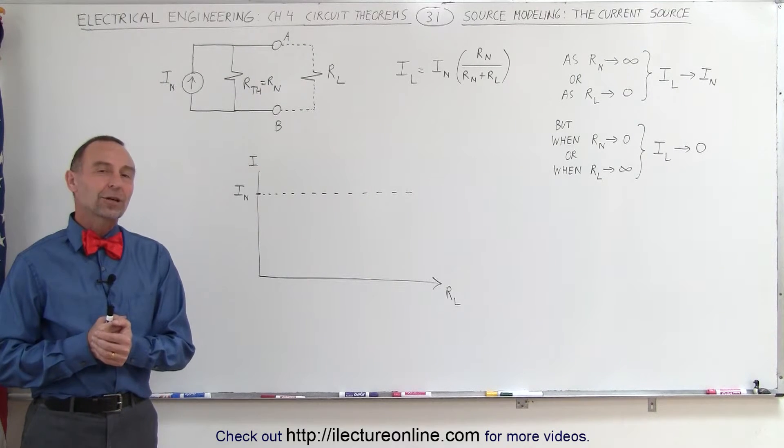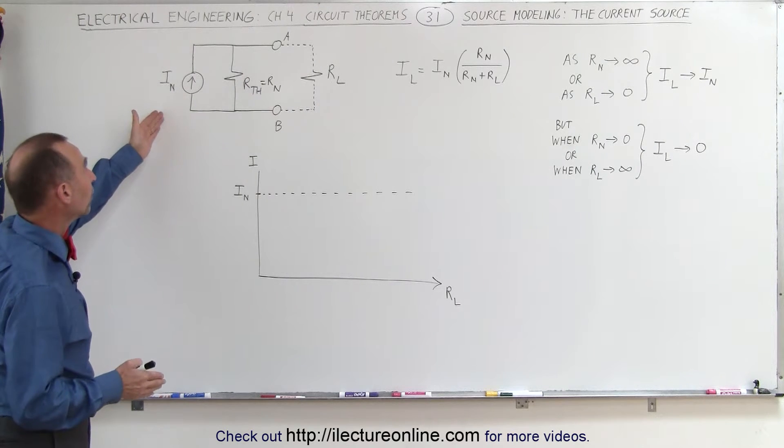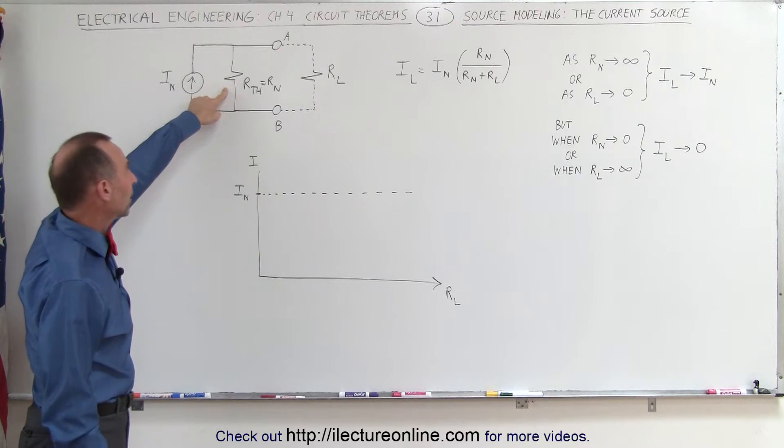Welcome to Electron Online. Now let's take a look at a current source. Here we have the Norton equivalent of a linear circuit, which has a current source and a resistor in parallel.